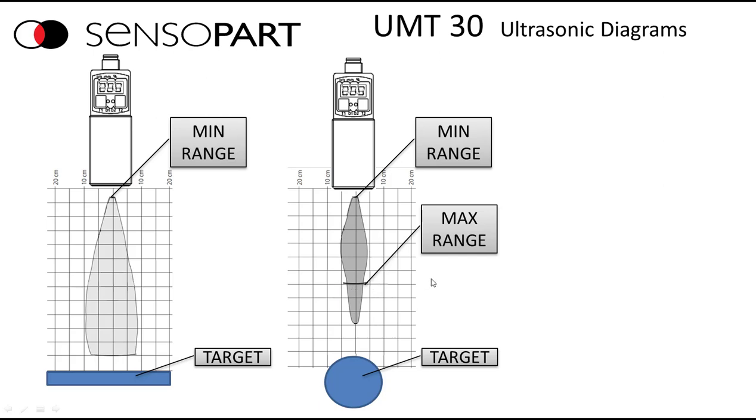And you can see the line where we publish the maximum range of the sensor. So if you have a flat, good target, you can actually see longer than the published maximum range of the sensor.